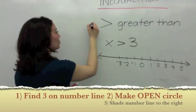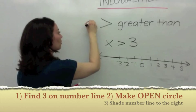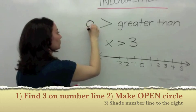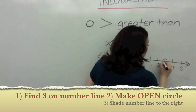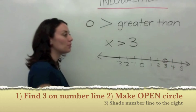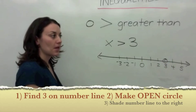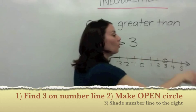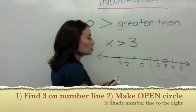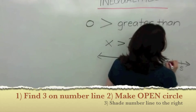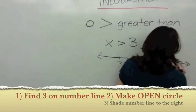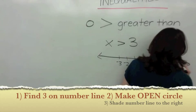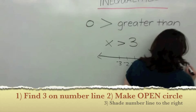Open circle — that's what this means. So I'll draw my open circle. If X is greater than 3, X could be any value that is more than 3. So we shade in everything to the right, because everything to the right is larger.